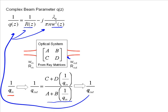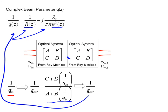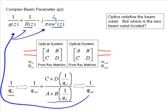And again, what this gives us is the waist at the output plane. Of course, if you have multiple optical systems, it's fairly easy just to multiply the matrices together and calculate whatever you need from there. So it's really a very powerful technique.